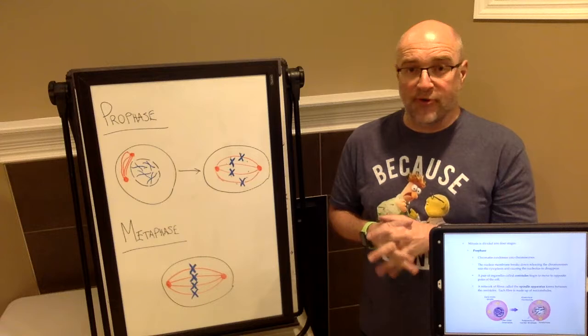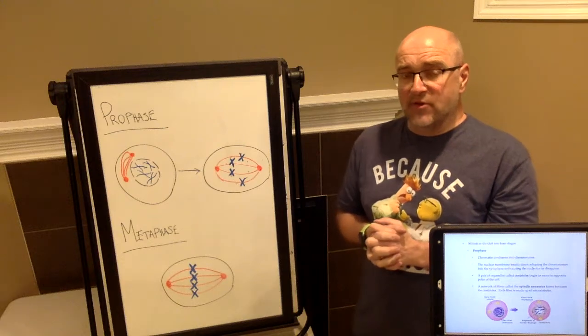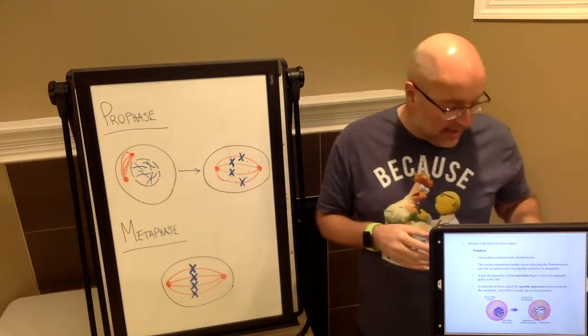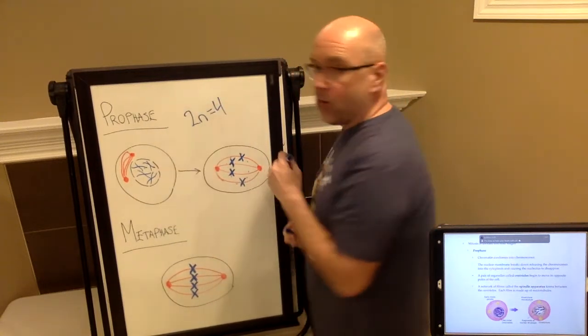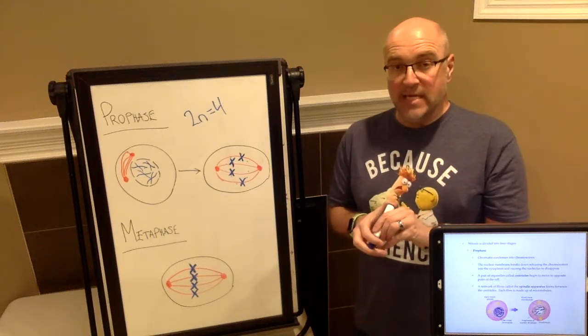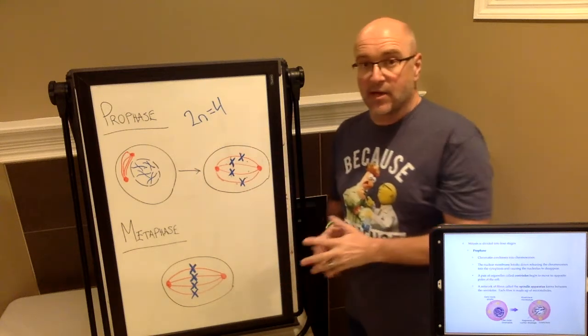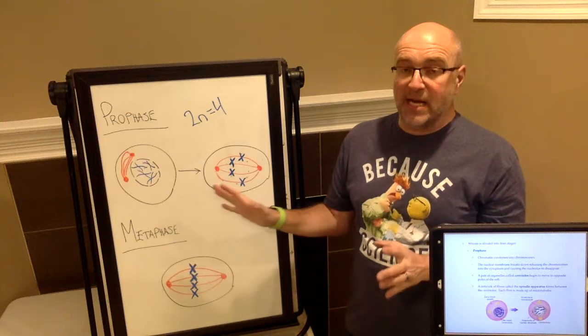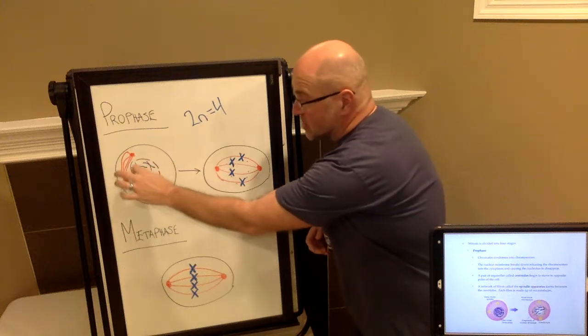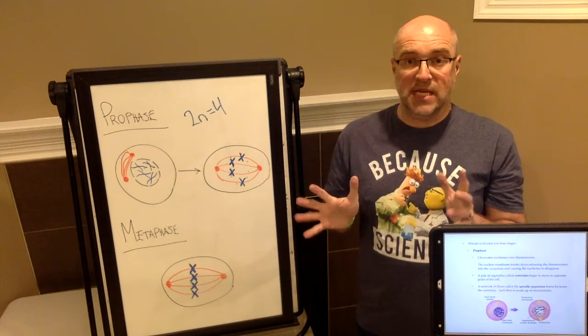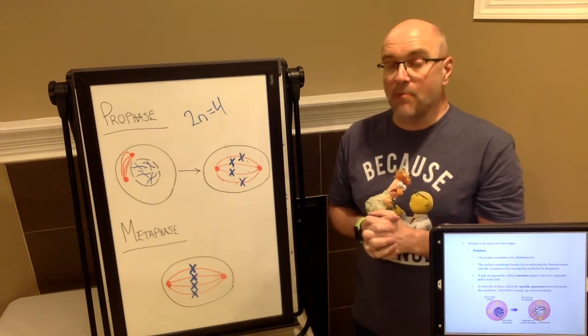So let's talk about prophase first. Prophase is the start of cell division. You've got to remember that in the case of this organism, this cell is going to be a 2N equals 4 cell. So this is a diploid cell that has four chromosomes in it. That's what we're dealing with in this cell division. You can see right now that at the beginning of prophase, your DNA has already been duplicated.